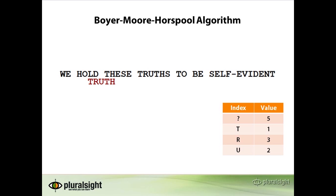Now we have a more interesting case. Again, we compare the string to find from right to left. We see that the h in truth matches the h in these, so we move one character to the left and see that the t in truth matches the t in these. Going once more to the left, we see that the u in truth does not match the space character, so we have a bad match. When we consult the bad match table, we see that the space character does not exist, so the default value 5 is returned and we skip forward 5 characters.